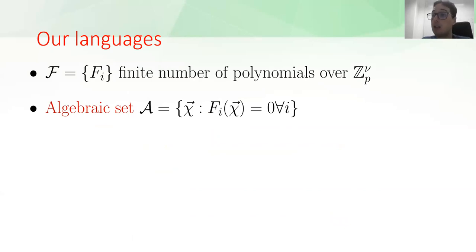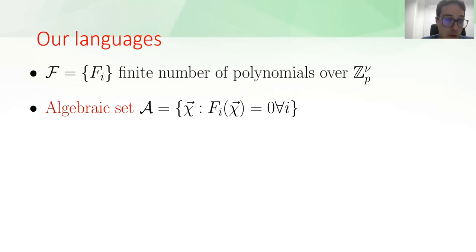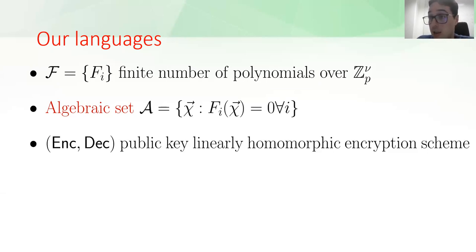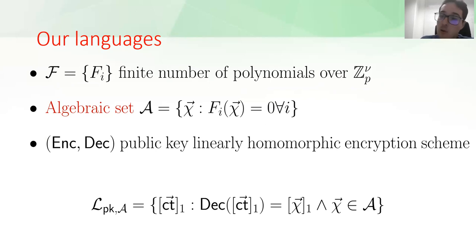Let's now formally define how our languages are defined. First, we pick a finite set of polynomials over a finite field. An algebraic set is the set of x such that f(x) = 0 for each f in the chosen set of polynomials. We then choose a publicly linearly homomorphic encryption scheme. The language is defined by the algebraic set and the encryption scheme as the set of encryptions of an x that is in the algebraic set—for example, an encryption of a common root of a given public set of polynomials.